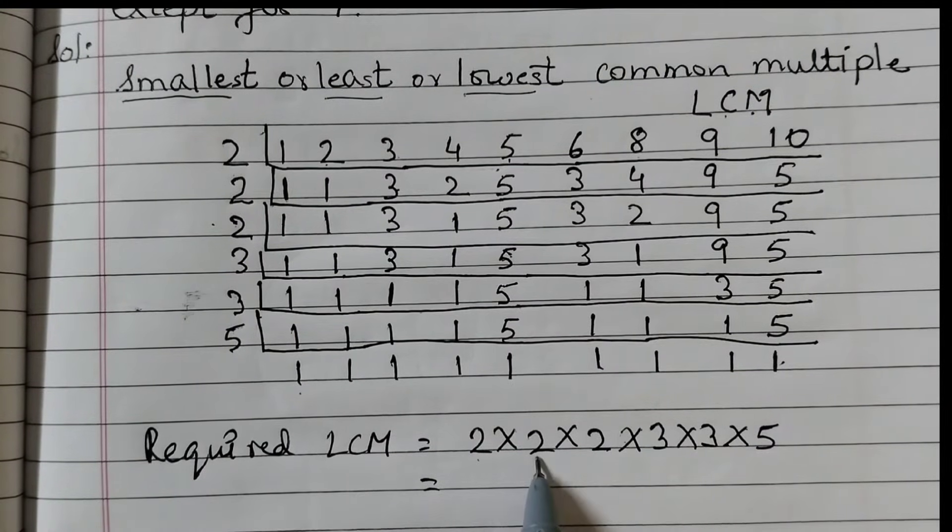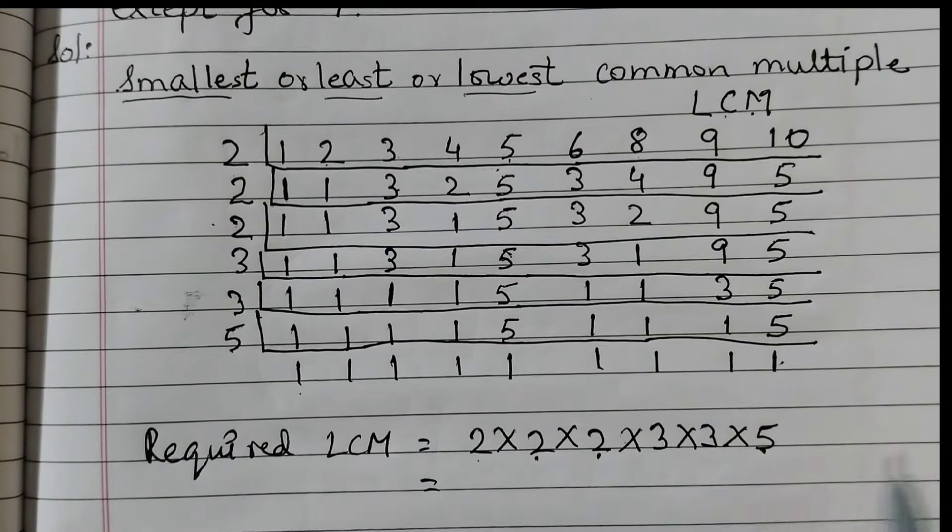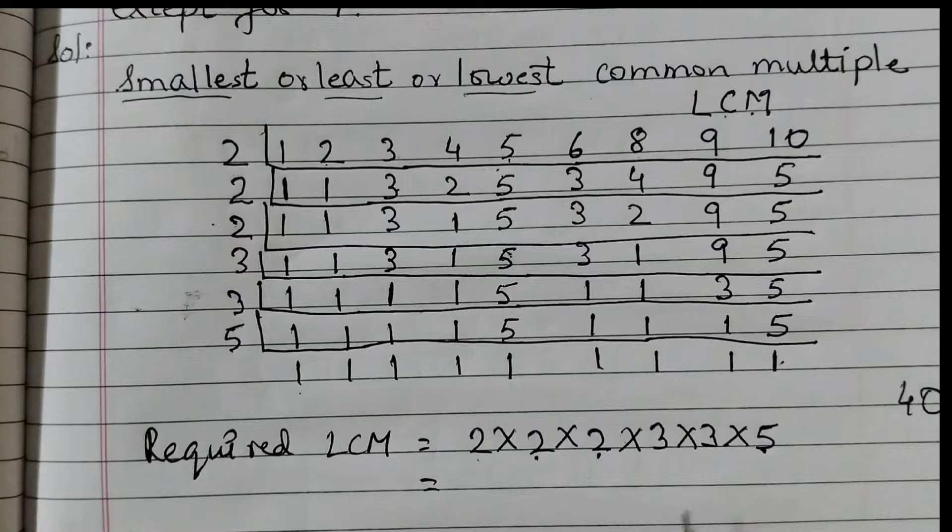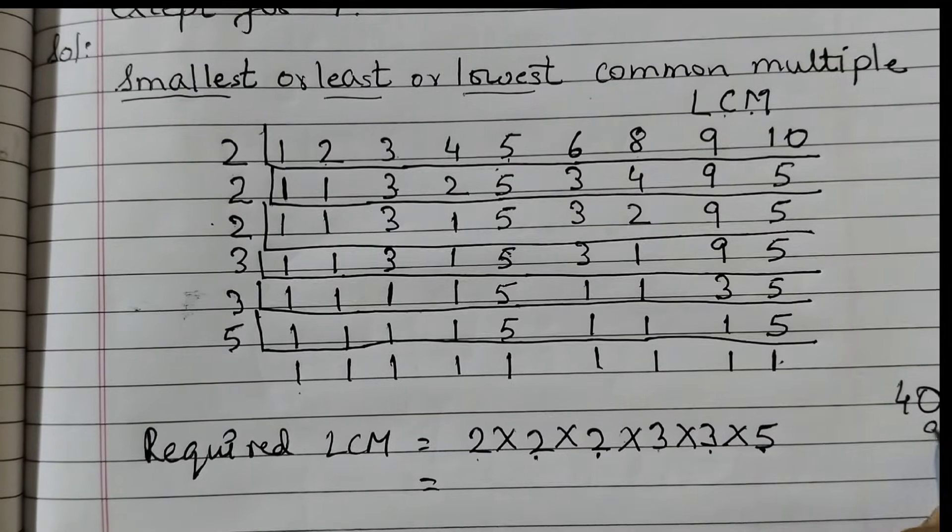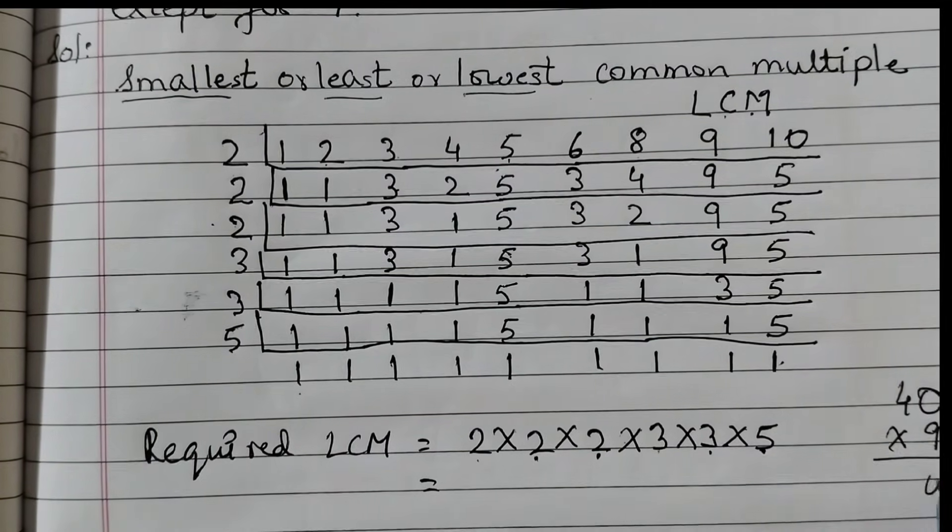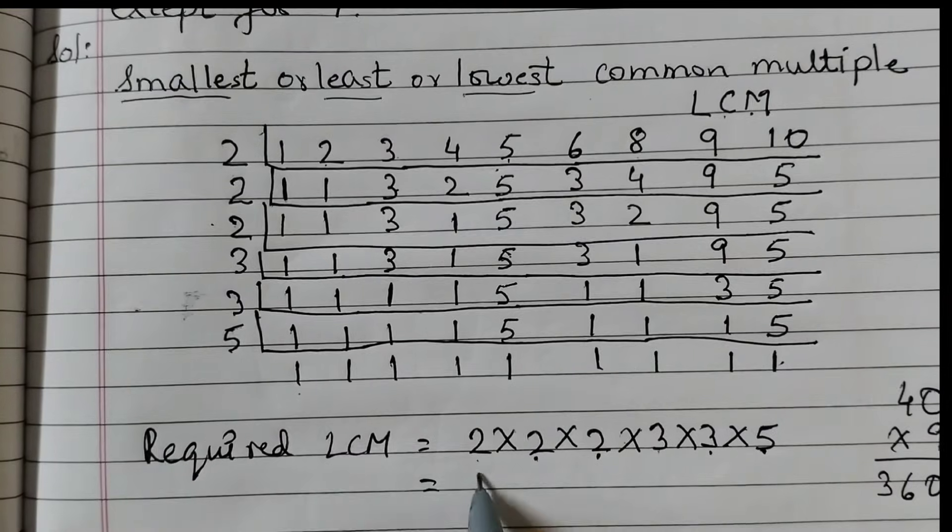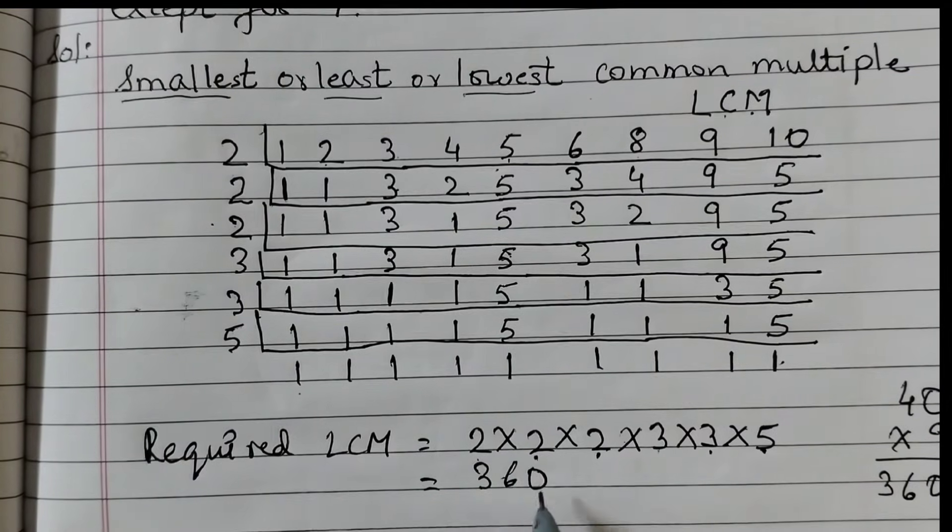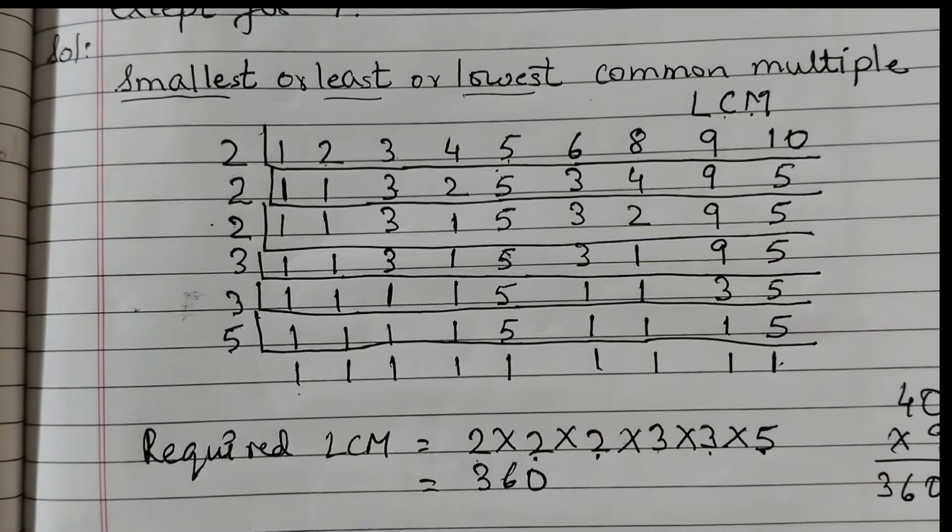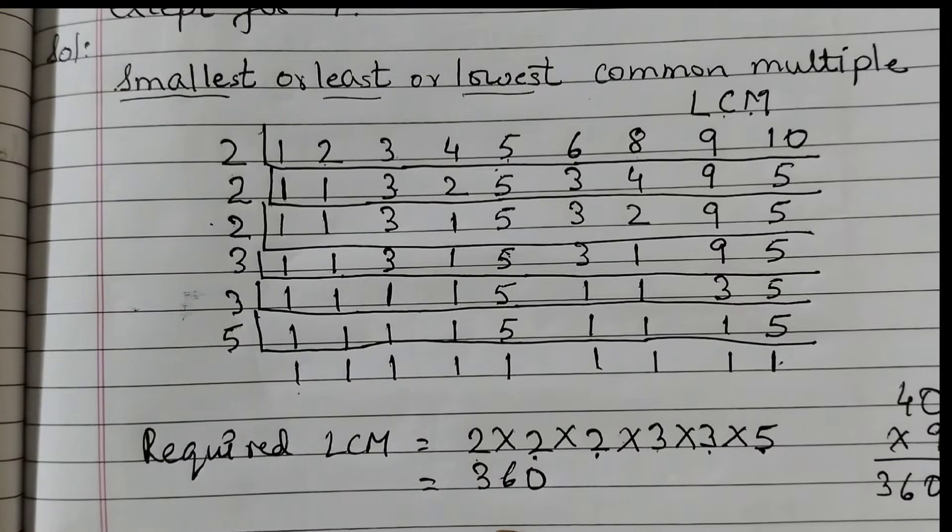2 twos are 4. 4 twos are 8. 8 fives are 40, 40 here done. And 3 threes are 9. So 40 times 9 is 360. So the required LCM, or the smallest number that is a multiple of all the numbers except 7, is 360.